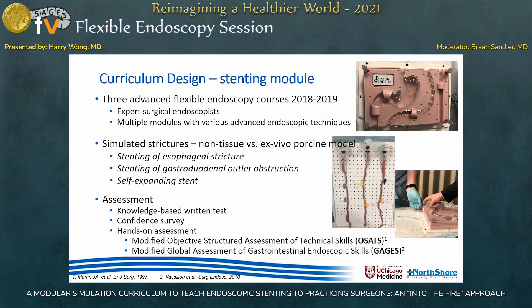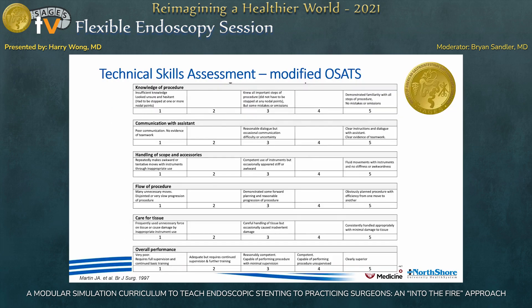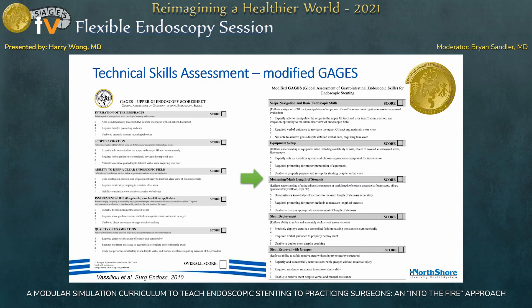The simulated tasks covered esophageal stricture and gastroduodenal outlet obstruction using a self-expanding stent. Assessments were made using a multiple-choice knowledge-based written exam, a confidence survey, and hands-on assessment using the modified Objective Structured Assessment of Technical Skills (OSATS) and modified Global Assessment of Gastrointestinal Endoscopic Skills (GAGES). In the first two earlier courses, the modified OSATS was used to evaluate technical skills, with modifications to instrument handling and respect for tissue.